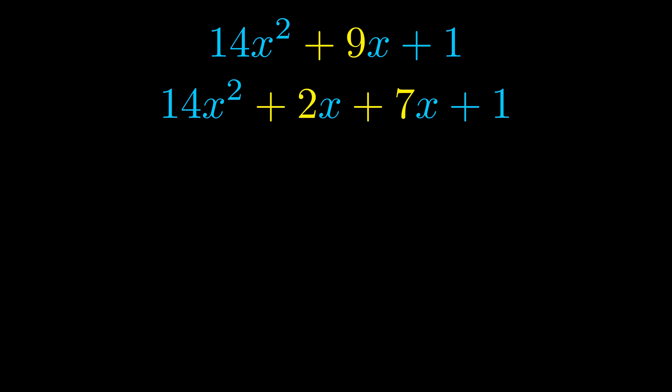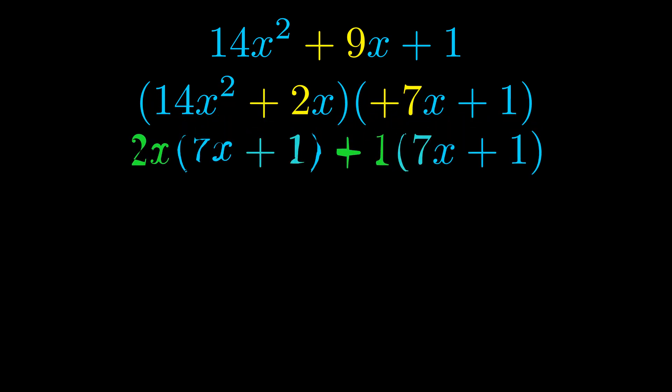Once we've done this, we go ahead and put parentheses around the first term and the last term. And we do that so that we can take the greatest common factor out of both terms. We can see the greatest common factor is now outside in green.